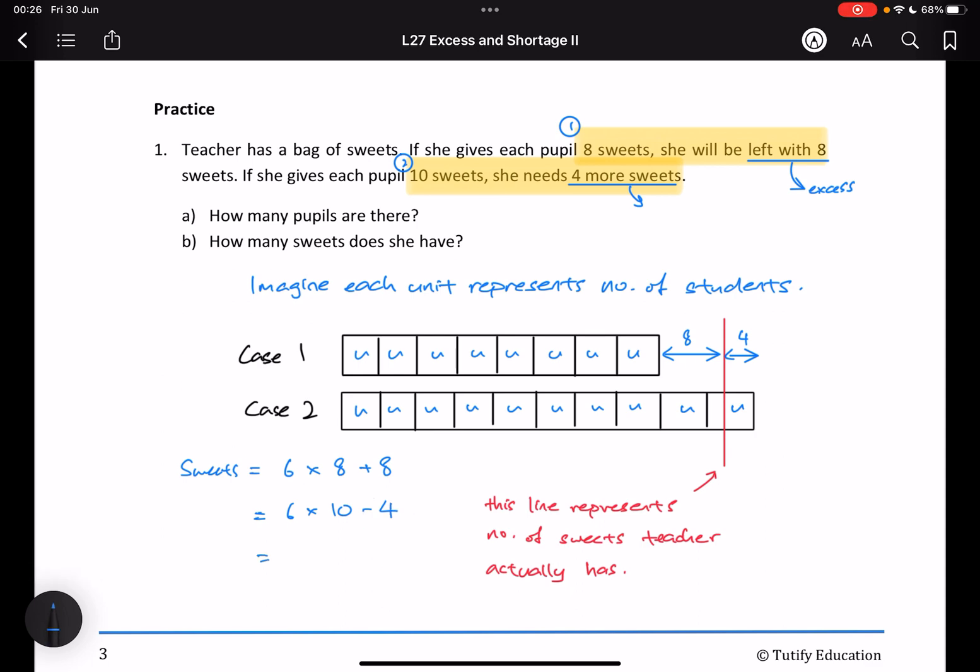No matter what I do, six times eight, 48 plus eight, 56. Six times ten, 60 minus four. No matter which scenario you use, you will always end up with 56 sweets and six students.